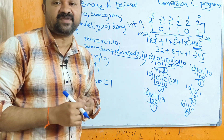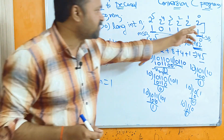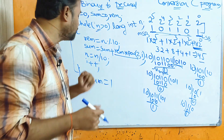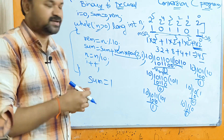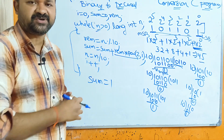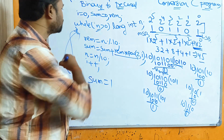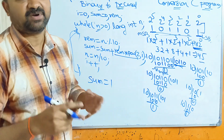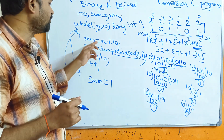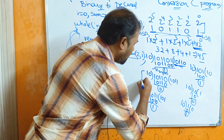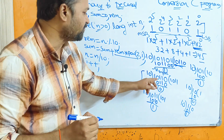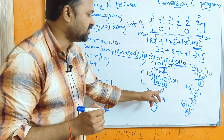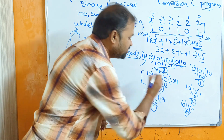After n = n / 10, n becomes 10110. Then i is incremented: i++, so i becomes 1. The loop continues while n > 0. With n = 10110, the condition is true. Now rem = n % 10, which gives remainder 0.